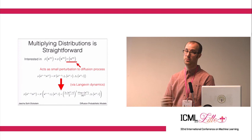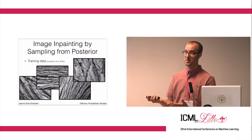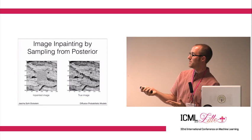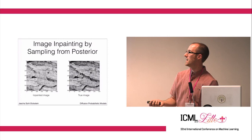As a specific example of this, here we trained a model on images of bark, which is another naturalistic image data set. Here we're going to sample from the posterior over the central 100 pixel by 100 pixel region conditioned on the surround. And we're running the same diffusion process. You can observe, first of all, that it's straightforward to sample from a posterior.